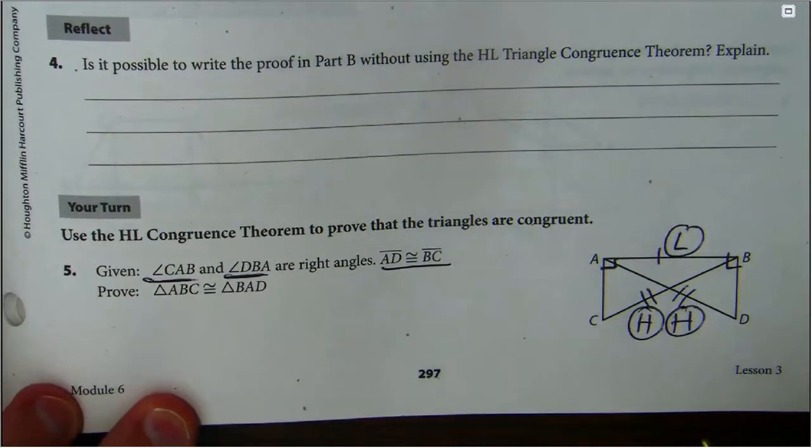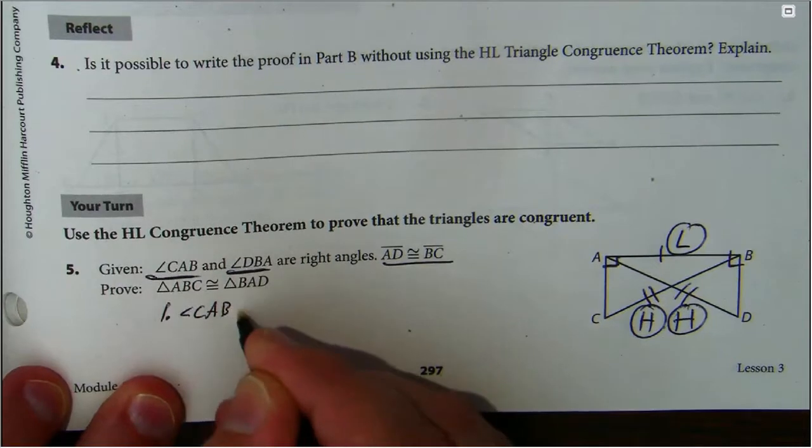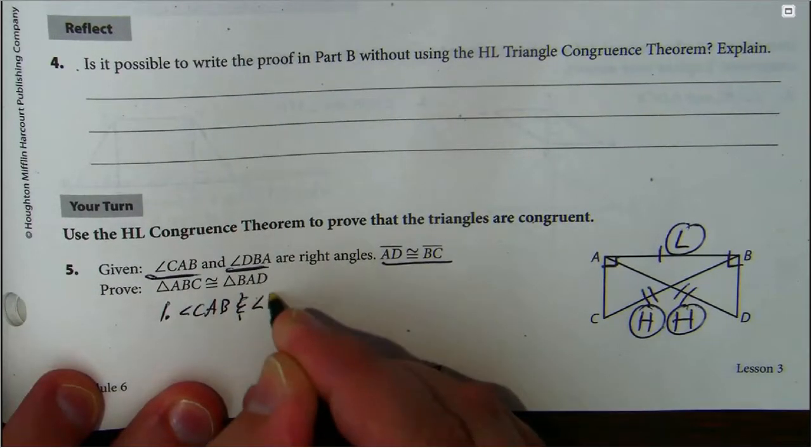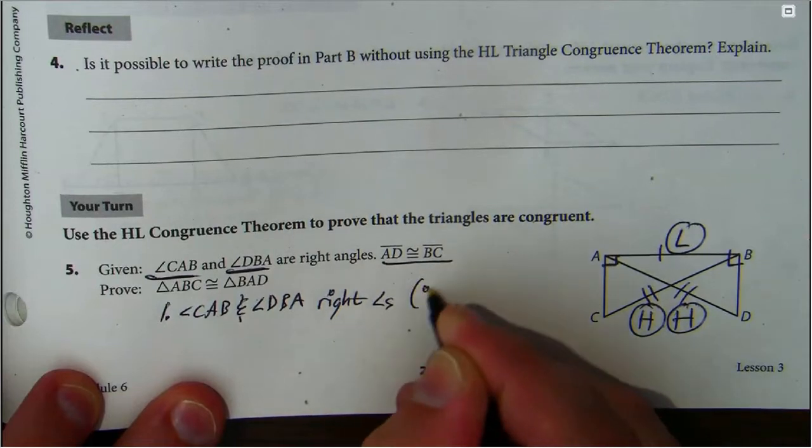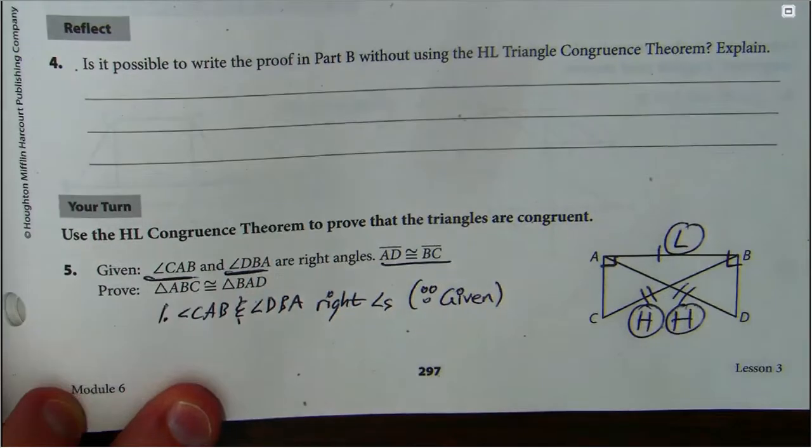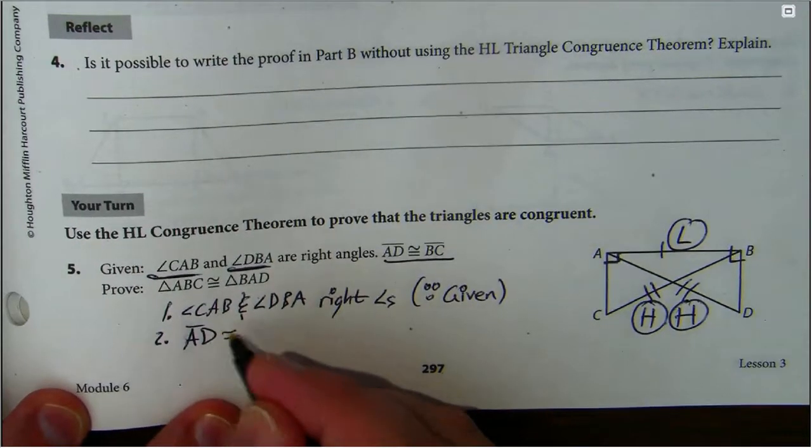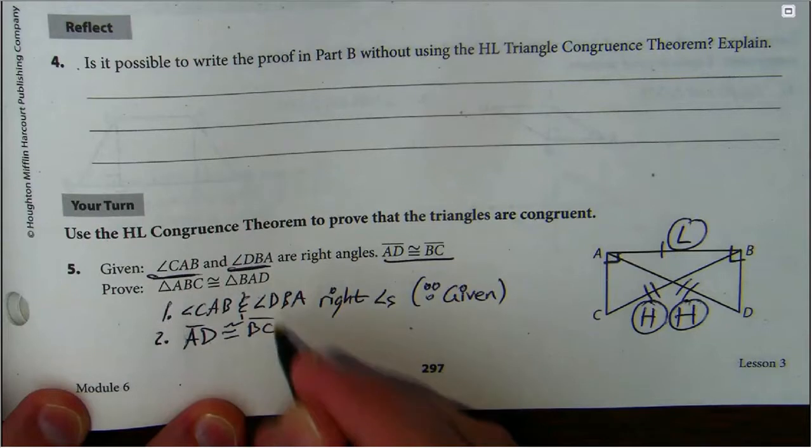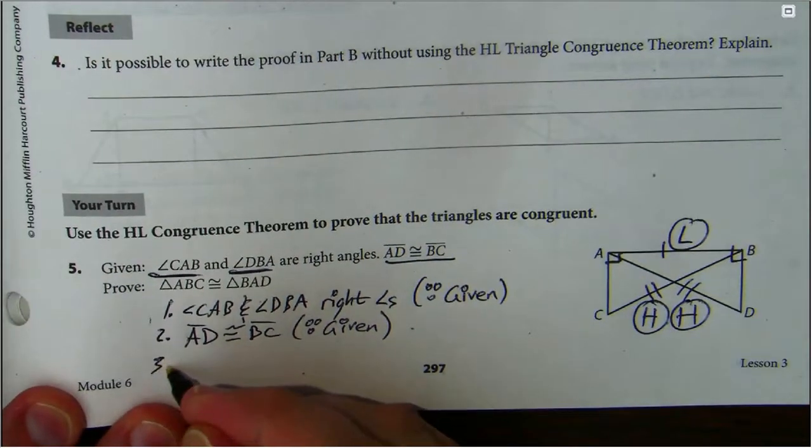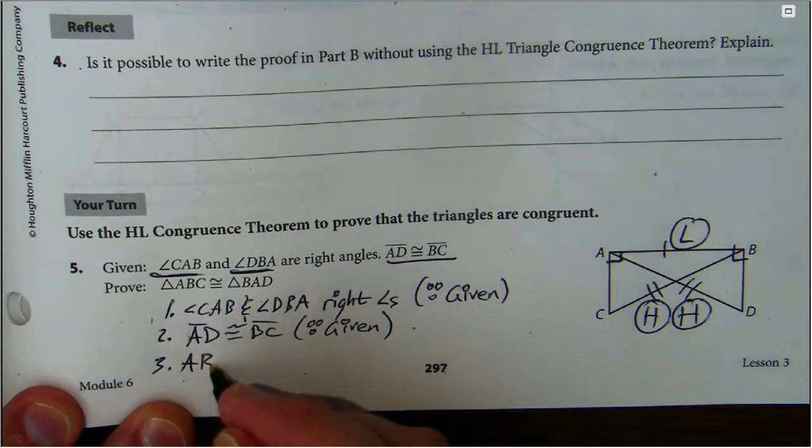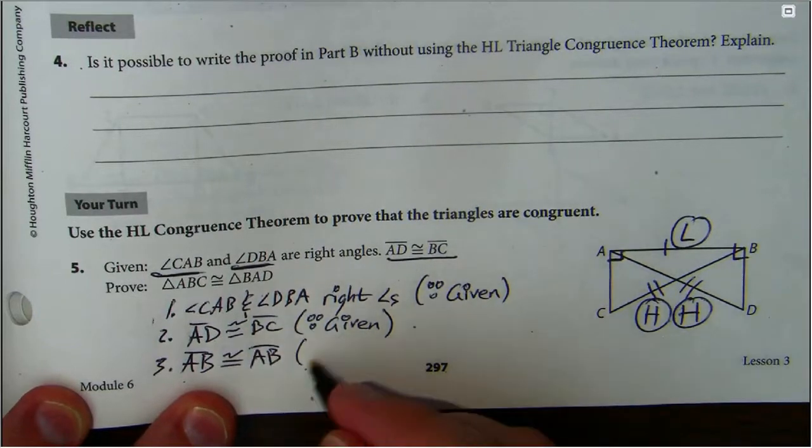We have enough to start going. First things first, we got angle CAB and angle DBA are right angles, and that was given. Step two, we had that AD is congruent to BC, and that was because it was given. And then step three, the reflexive property helped us out. So AB is being shared by both triangles. Of course, AB is congruent to itself. That is the reflexive property.